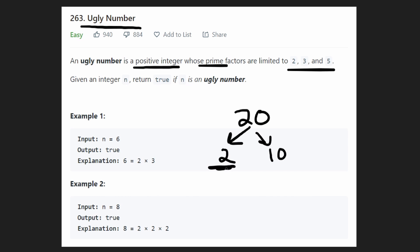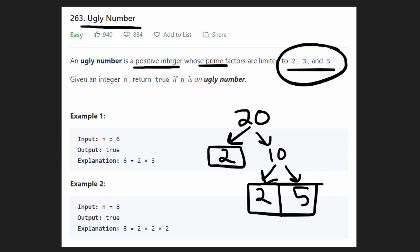We can't break down 2 anymore, right? But what about 10? This can be broken down into 2 and 5, right? This 5 cannot be broken down. Neither can this 2, neither can this 2. So we saw that, yeah, we broke this number down and we broke it down into 2, 2, and 5. And these are all within these factors that we're allowed to have, right? So 20 is, yes, an ugly number.